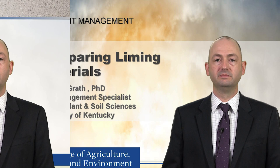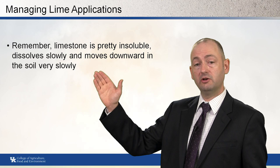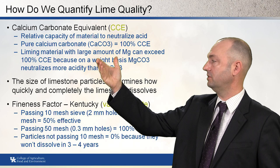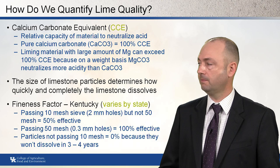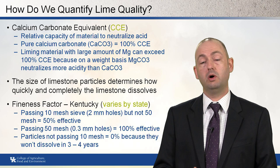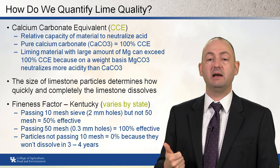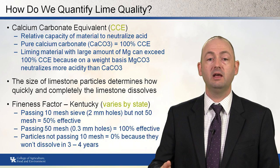Liming materials are not all created equal, so how do we compare them? Limestone is relatively insoluble, dissolving slowly and moving downward in the soil very slowly. To compare lime quality, we use calcium carbonate equivalency (CCE). Different regions may use different terminology, but it means the relative capacity of a material to neutralize an acid. Pure calcium carbonate (CaCO₃) equals 100% CCE. A lime material with a large amount of magnesium can exceed 100% CCE because, on a weight basis, magnesium carbonate neutralizes more acidity than calcium carbonate.